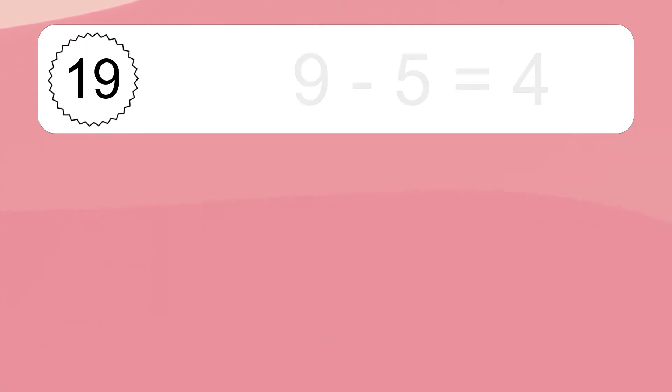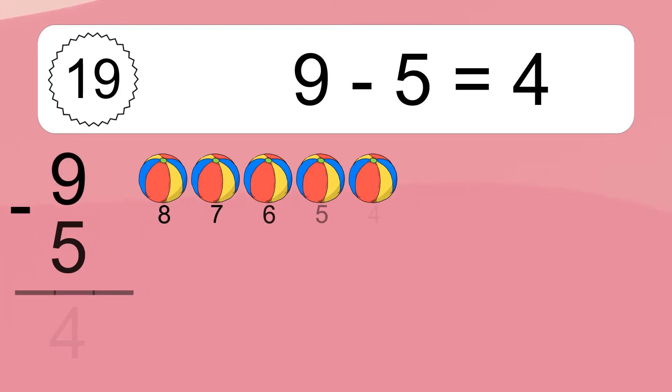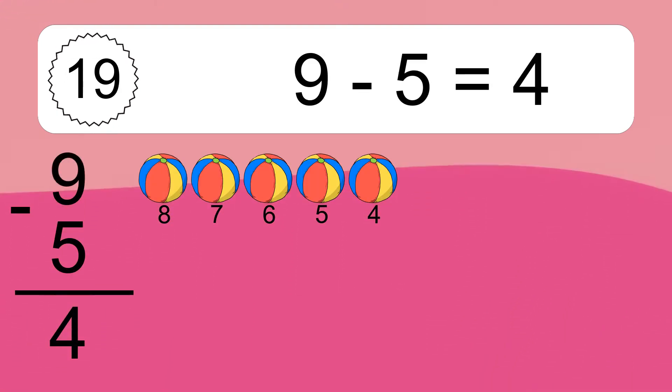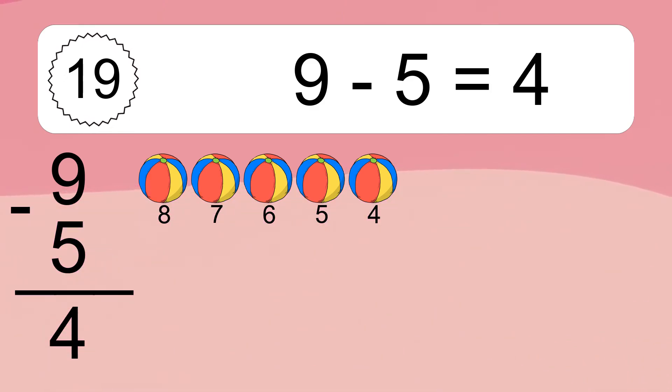9 minus 5 equals what? 9 minus 5 equals 4. Let's count it: 8, 7, 6, 5, 4.